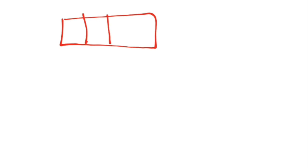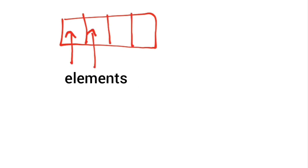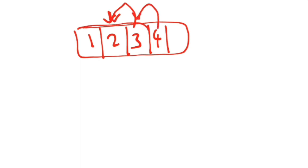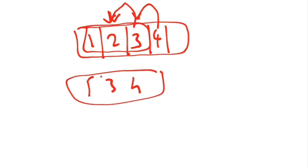First, you have an array. An array is a space allocated which can have many spaces to insert many elements — that's known as an array. If the examiner asks how to delete an element from an array, suppose this is an array and you have to delete the element 2, then you will just shift 3 here and shift 4 here, and consider the array from there — so the array will be 1, 3, and 4. That's the way to delete an element.